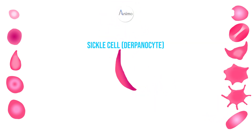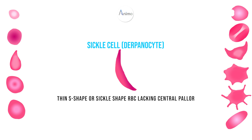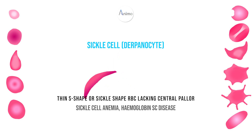The next RBC is sickle cell, also called drepanocyte. It is a thin S-shaped or sickle-shaped RBC that lacks the central pallor. It is found in sickle cell anemia and hemoglobin SC disease.